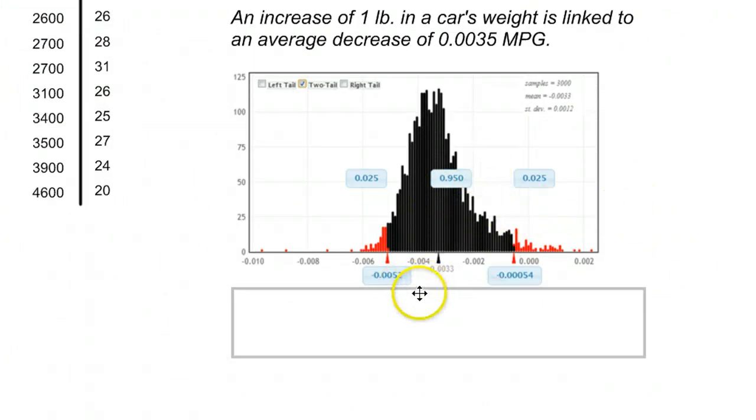The middle 95% is going to fall between these two values here, negative 0.0052 and negative 0.00054. So something very close to zero on this end, a little bit farther away on the left side. And if we remember, our 0.0035 is roughly halfway in between these values. So that makes rough sense.